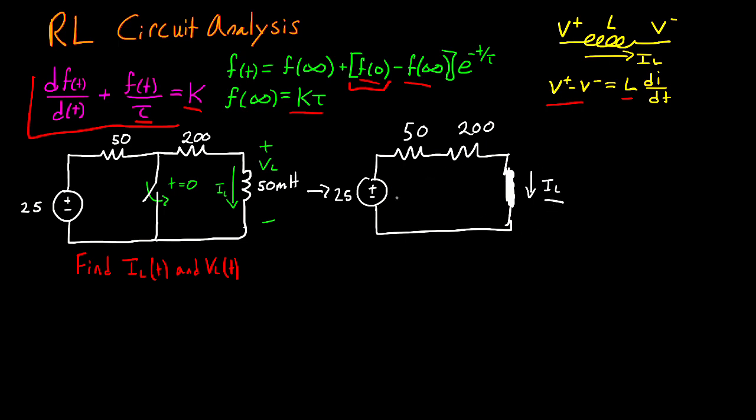And our first job is to find this current IL. And this current is going to be the result of my 25 volts with these two resistors in series. So from here, we can solve for IL. And this is going to be our initial current, IL of 0. And this is going to be equal to 25 divided by the sum of these two resistors. And that's going to be 250. And that gives me a value of 0.1. And that's everything we need to find from this first circuit analysis.